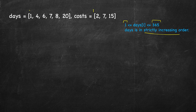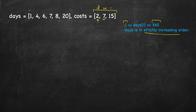We have three types of passes available. First is a daily pass, valid for one day, which costs 2 units. Next is a weekly pass, valid for 7 days, which costs 7 units. And finally a monthly pass, valid for 30 days, which costs 15 units.